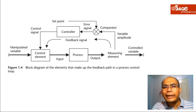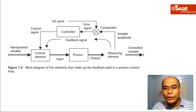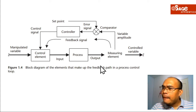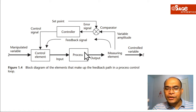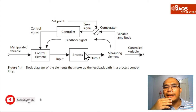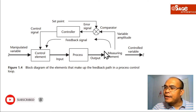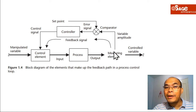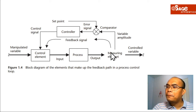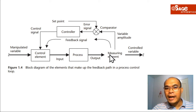Last time we discussed the basic concept and terminologies in process control systems, including this block diagram — the process, the measuring element, the controller, and so on. One of the important elements is the measuring element; that's where our sensors come in. In the succeeding videos, we will discuss how to measure physical quantities such as temperature, pressure, flow, and humidity using sensors.